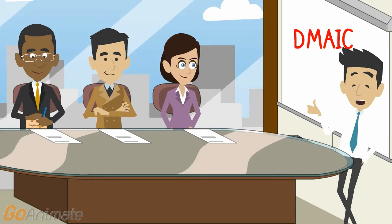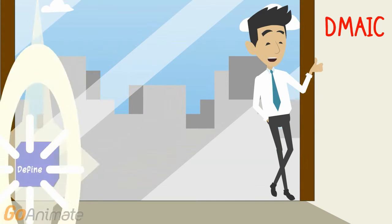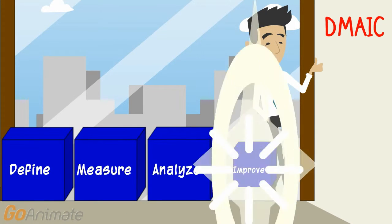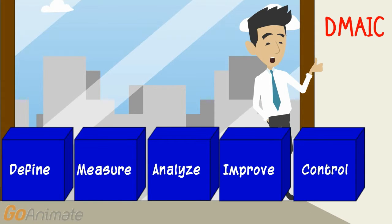Hello, ladies and gentlemen. Today we are going to talk about a five-step improvement process known as DMAIC. DMAIC stands for Define, Measure, Analyze, Improve, and Control. In this module, we will provide a brief introduction of the Analyze Phase.